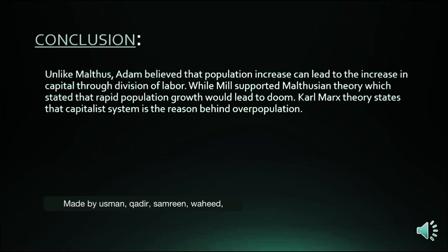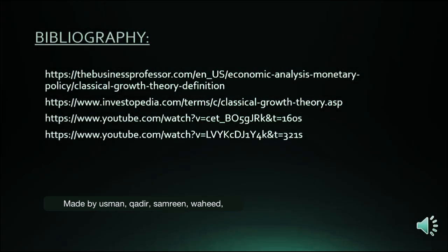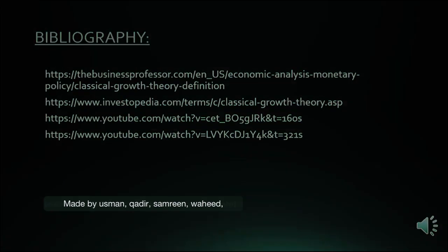So what have we learned in this video? We learned about classical economists and their thoughts on population growth. Number one, Adam Smith said that through population increase, you can increase your capital through division of labor. Mill supported Malthusian theory — that if there is rapid population growth and resources and land are occupied, it will lead to doom. And Karl Marx argued that overpopulation is the biggest problem of the capitalist system. I hope you guys have learned something from this video. Thank you so much for watching.